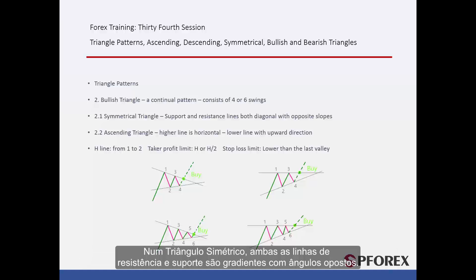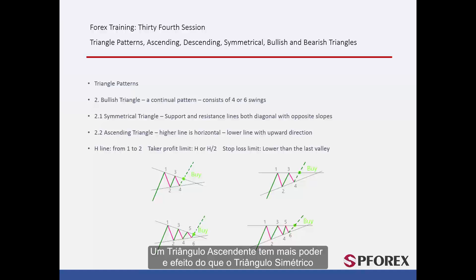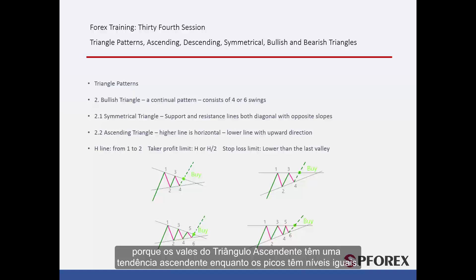In a symmetrical triangle, both the support and resistance lines are gradients with opposite angles. An ascending triangle has a resistance level, while the support line is an upward trend line. An ascending triangle has more power and effect than a symmetrical triangle, because valleys of an ascending triangle have an upward trend, while peaks have equal levels.